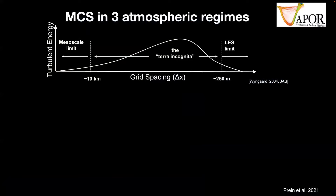In an idealized study we looked at how MCSs are simulated across three atmospheric regimes that differ in how we treat turbulence. The turbulence energy spectrum from Weingart 2014 shows roughly three regimes: the mesoscale limit on the left where we must use deep convection parameterizations; the terra incognita or gray zone of convection where kilometer-scale models operate — the largest overturning circulations are resolved but most are not; and the LES limit at very high resolution where deep convective motions are explicitly resolved. We don't have a good theory for the terra incognita region.